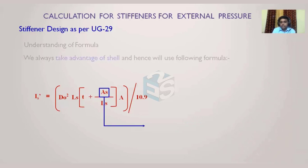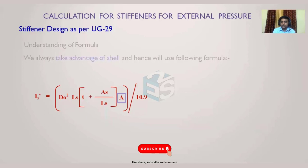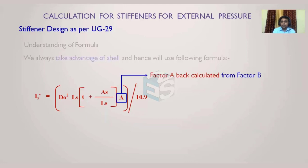As is a very important variable — it is the cross-sectional area of the stiffener ring. For example, if we use a flat bar rolled into a ring with dimensions 10 mm thickness × 50 mm width, then As = 10 × 50 = 500 mm². If we use a C-channel, then the cross-sectional area of that C-channel is used. As is simply the cross-sectional area of the stiffener ring being used.